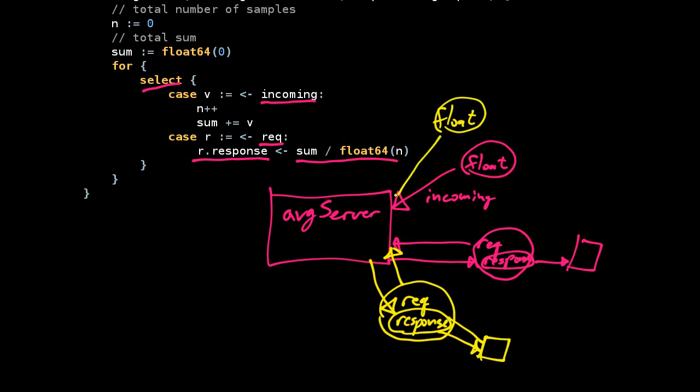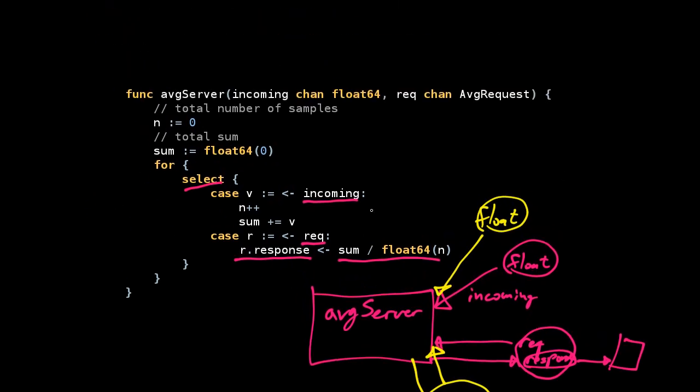We could also have multiple sources of data coming in. There could be some other source of data writing to this incoming channel—that's okay too. You can have all these things happening concurrently, and the language can deal with it and keep track of things very well. That's pretty cool.